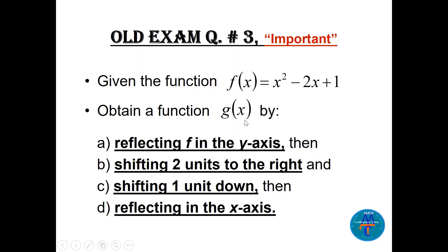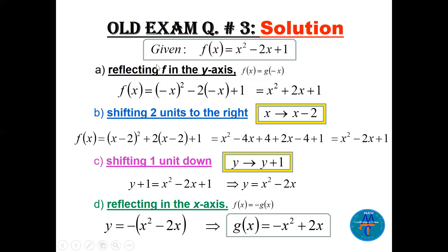To get g, we reflect f in the y-axis by replacing every x with −x and simplify. Then shift two units to the right by replacing x with (x − 2), expanding to x² − 4x + 4 and combining terms to get x² − 2x + 1. Shifting one unit down replaces y with y + 1, which becomes −1 on the other side, giving x² − 2x. Finally, reflecting in the x-axis multiplies the whole function by −1, so g(x) = −x² + 2x.